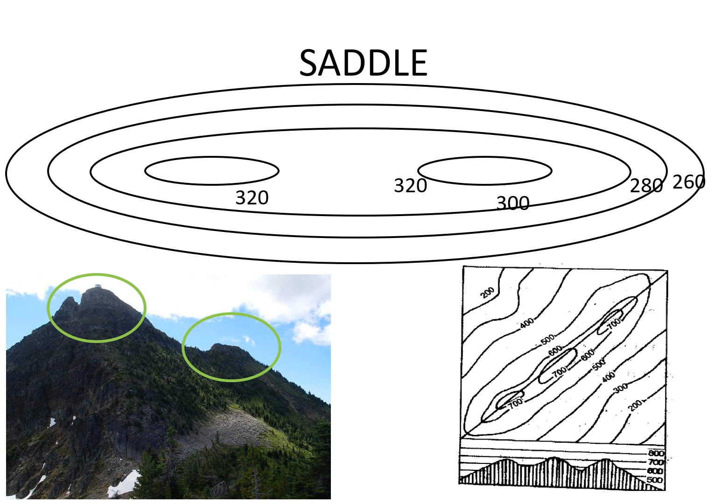Sometimes one hill may have more than one peak at the top. In that case, the two different peaks are shown by two different contour lines towards the top of the relief feature. This kind of feature is known as a saddle. A saddle can be formed on a hill or on a ridge.